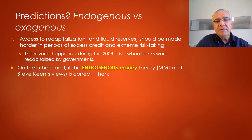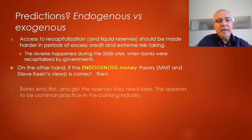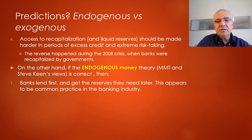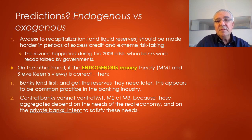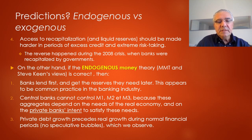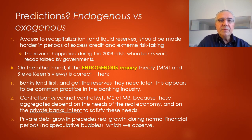On the other hand, if the endogenous money theory — held up as correct by MMT economists and by Steve Keen — is correct, then banks lend first and get the reserves later, which appears to be common practice in the banking industry. Banks have a hard time controlling the monetary aggregates, because the monetary aggregates depend first and foremost on the needs of the real economy and the private banks' desire to meet these needs. And we should actually see that private debt growth precedes real growth — and in the works of Steve Keen, he actually shows that empirically this is the case. Thank you very much for your attention.